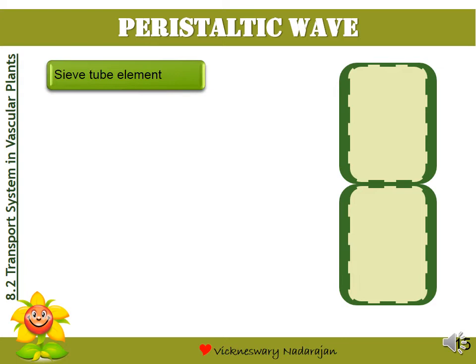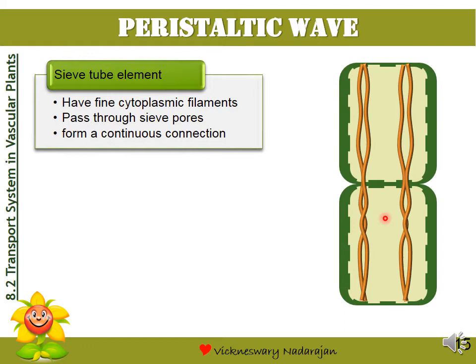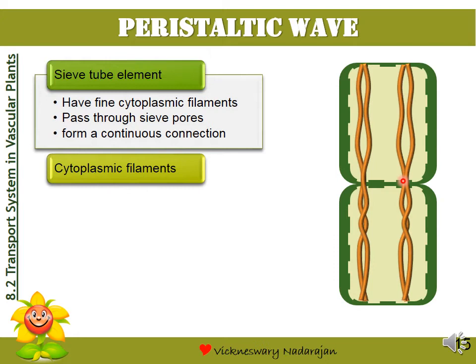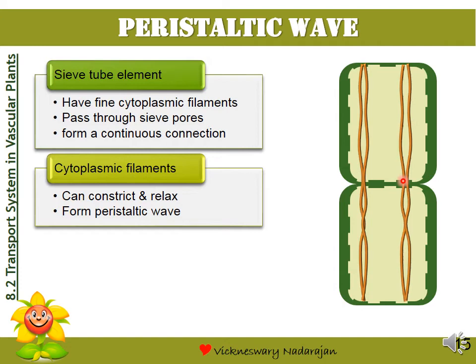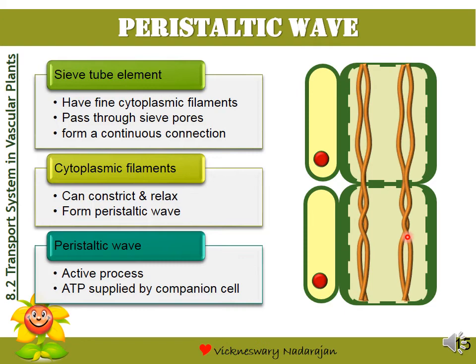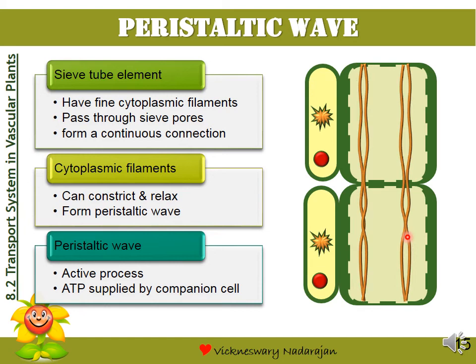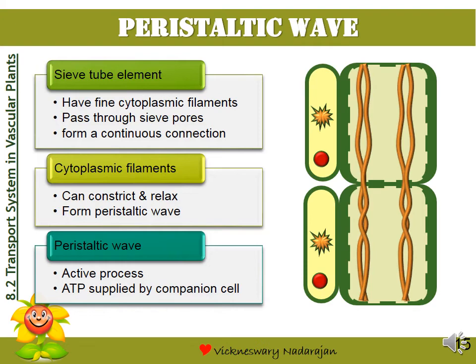In the peristaltic wave hypothesis, the sieve tube elements contain fine cytoplasmic filaments. These filaments pass through the sieve pores into the next sieve tube element, so the filaments make a continuous connection between the sieve tube elements. These cytoplasmic filaments are able to constrict and relax, and when they do that, they form a peristaltic wave. This peristaltic wave requires ATP since it is an active process, and that ATP can be supplied by the companion cell.